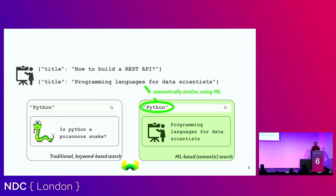With a vector database, this is possible because it understands that the keyword 'Python' is semantically similar to 'programming language data scientist', and it retrieves that even though there is no exact string match.